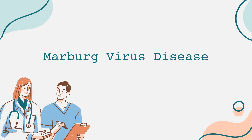The Marburg virus is zoonotic, meaning it originates in animals and can be transmitted to humans. The natural hosts of the virus are fruit bats, specifically the Rousettus species, found in various regions of Africa. Human infections often occur through direct contact with bat bodies or through environments contaminated with bat secretions.